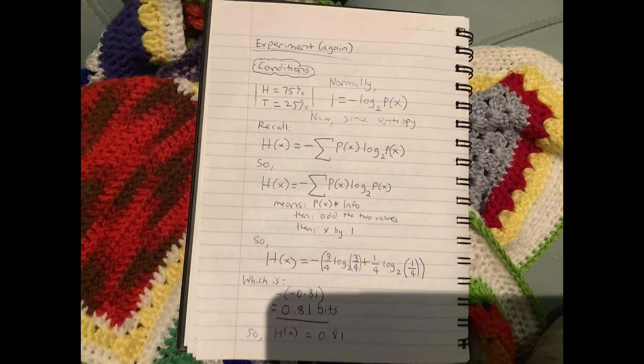So now, the formula. We have entropy equals to the negative summation of the probability multiplied by the binary logarithm of the probability. So substituting that in, we'll do the brackets first.